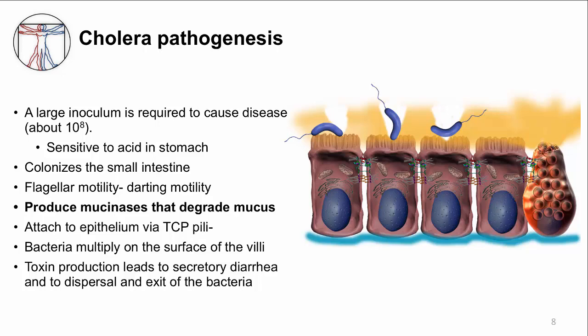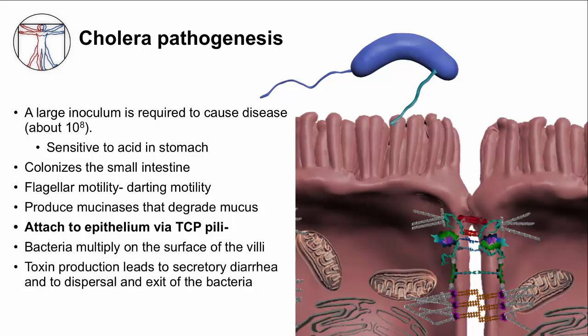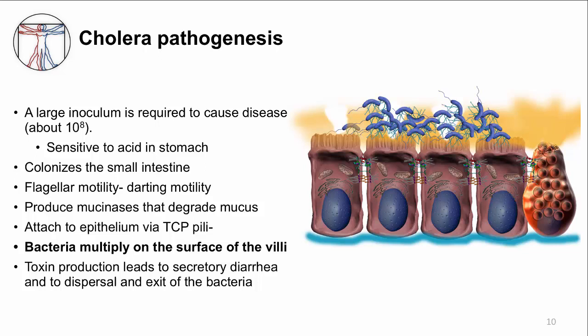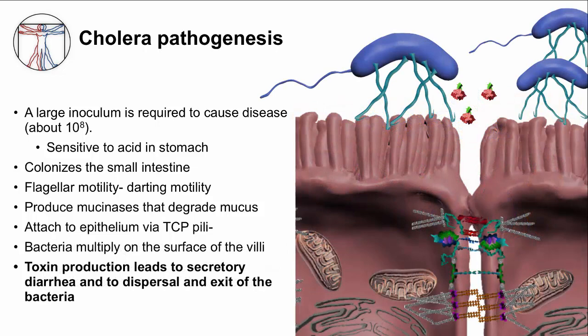The next critical stage is attachment, which occurs through pili called TCP. TCP pili are also important for attaching Vibrio bacteria to each other, which is important for the next step. The bacteria multiply on the surface of the epithelium and grow to massive amounts. In the life cycle of the microbe, the next step is for bacteria to exit. Cholera toxin is produced as an exit strategy — it is a signal to disperse. Cholera toxin induces massive secretory diarrhea, and this is how Vibrio cholerae exits the host. A lot is known about cholera toxin, and it exemplifies how a large class of bacterial toxins work.